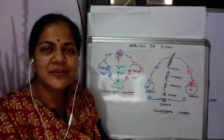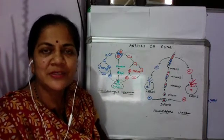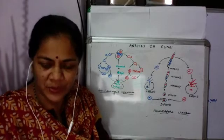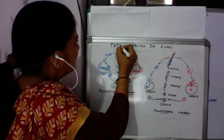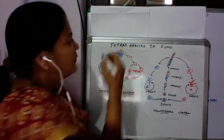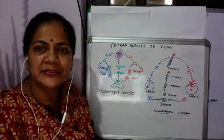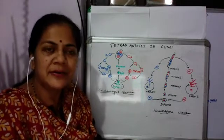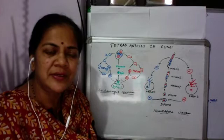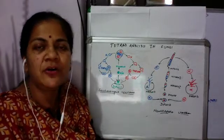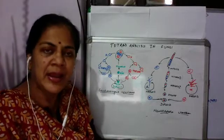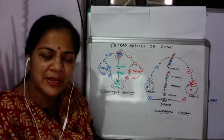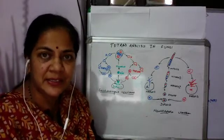Hello everyone. In this video I'll be talking about gene mapping in fungi, which is also called tetrad analysis. Gene mapping, as you all know, is the way by which we position each gene on the chromosome with relative distances between each gene, and in this way we can have an idea about the linkage and the linkage groups.